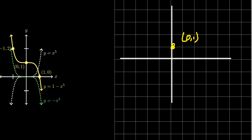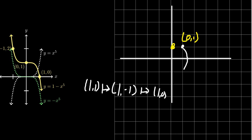What about some of the other points? Let's consider the point 1,1. When you reflect that across the x axis, it becomes the point one comma negative one. And then when you shift things up by one, that moves it to be one comma zero. So we start off with point 1,1, it got reflected down to be one negative one, then you shift it up by one, and we get the point one comma zero.